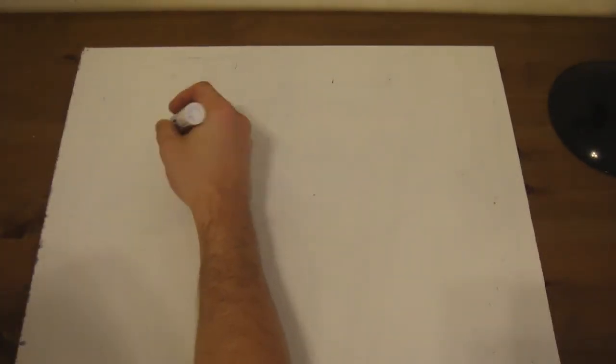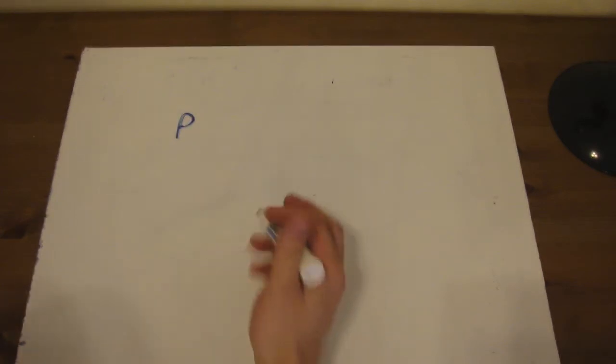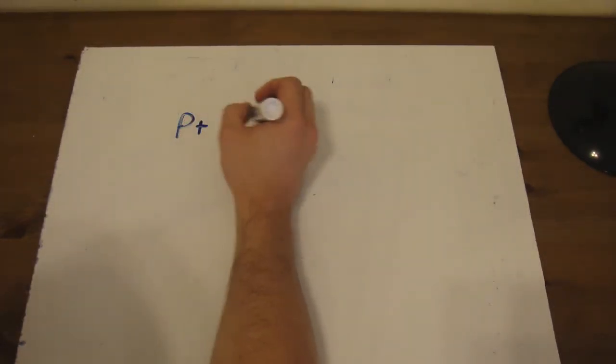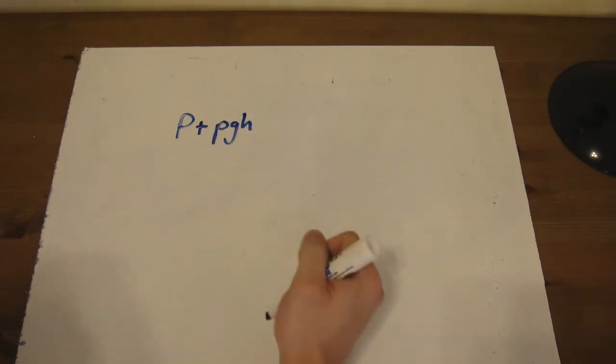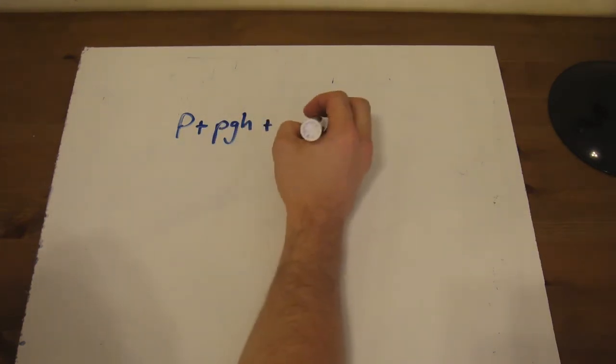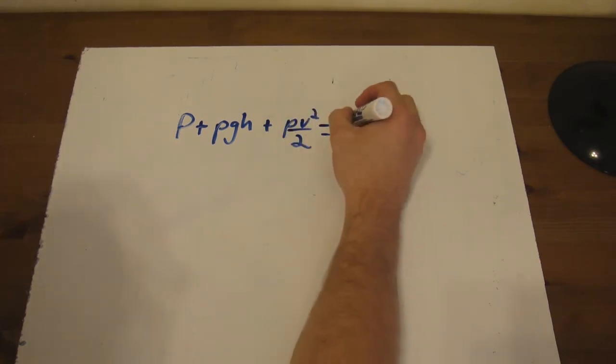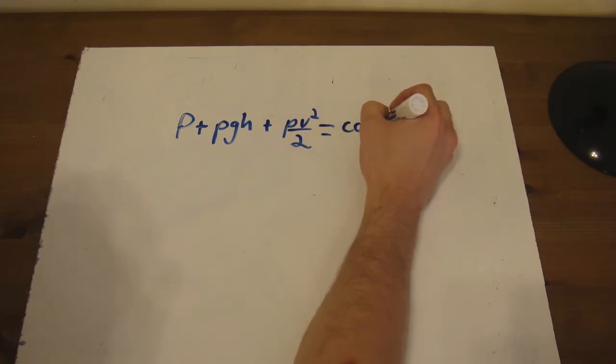All right. So what is the final form of the Bernoulli equation? Well, let me erase this. So let's rewrite it. The first component is just going to be pressure by itself because we are multiplying the density out. That makes the next component over here rho GH instead of just GH. And the last component is going to be rho V squared over 2 instead of just V squared over 2. And that's all going to be equal to a constant.